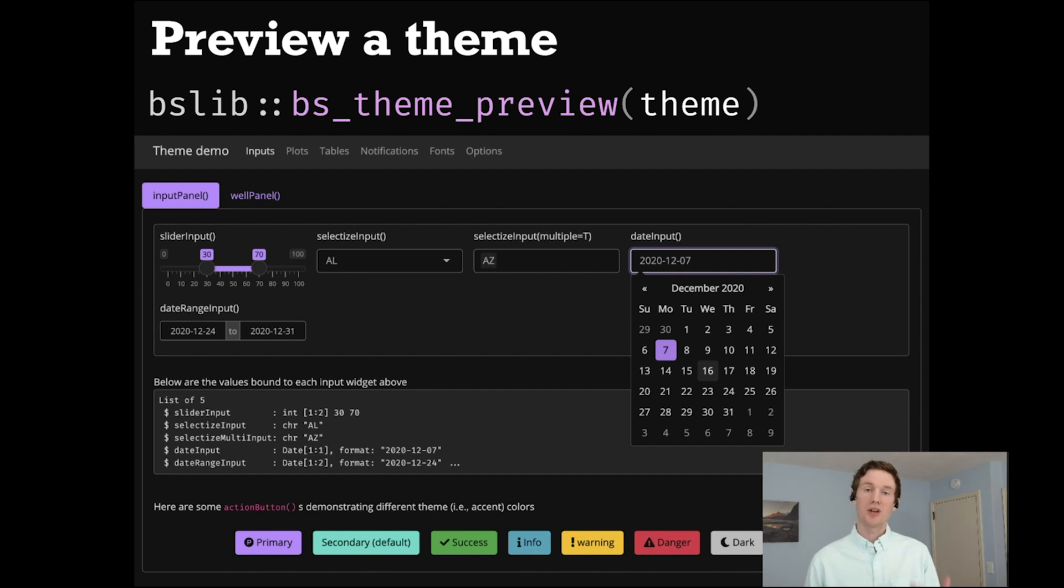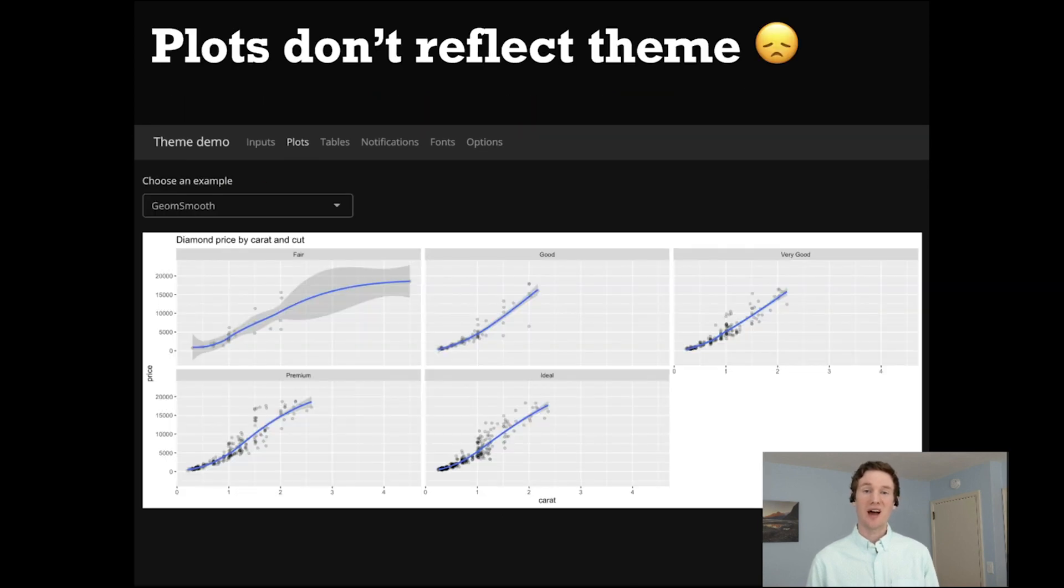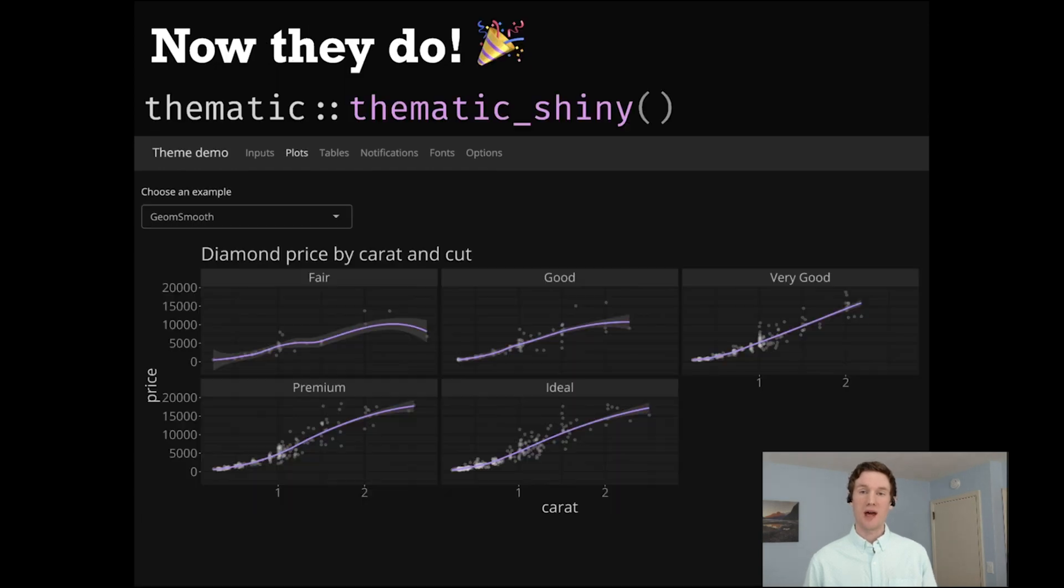Now, if you were to include a bs_theme object inside of your own application, you might notice that the styling of your application doesn't propagate to the static R plots that are generated by your Shiny app. And this is one of the reasons why we created the thematic package. If you call this thematic_shiny function just prior to running the Shiny application, then all of the static R plots that are generated by the Shiny app will use the CSS styles on their container to set new theming defaults on the R side.